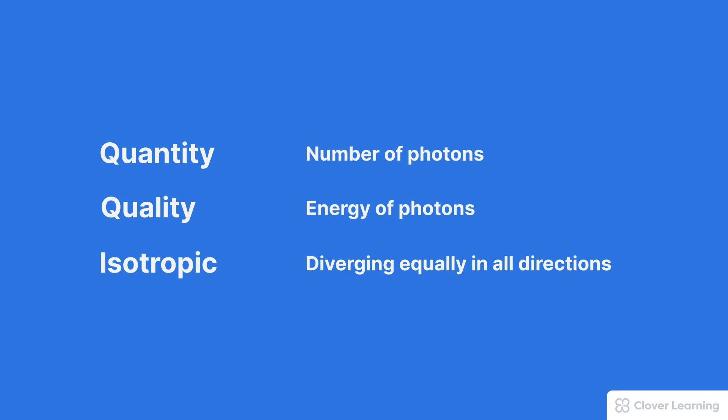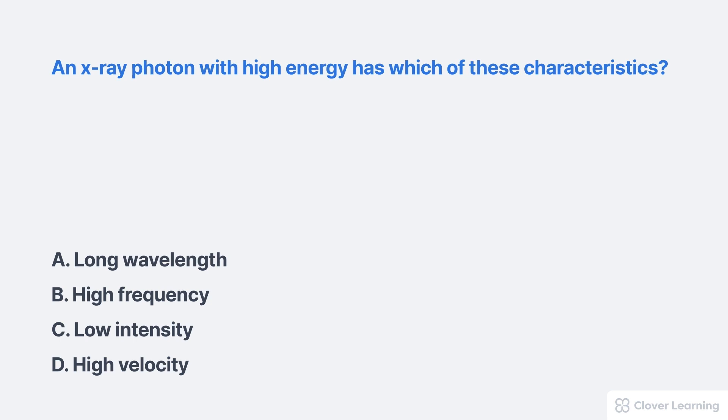Finally, we talked about the term isotropic. Isotropic refers to a condition of diverging equally in all directions. Here's a practice problem to make sure that you understand these concepts.